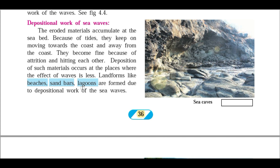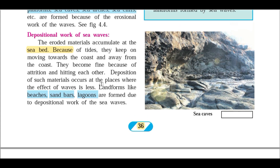Landforms like beaches, sand dunes, and lagoons are formed due to the depositional work of sea waves. When sea waves repeatedly hit a shore, the rock material that erodes collects on the seabed. Rivers also bring sediment which deposits on the seabed. Waves then carry this sediment toward the coast and deposit it there. High tides carry material further, and tsunamis bring large amounts of material. This continuous cycle of deposition and erosion forms beaches, sand bars, and lagoons.